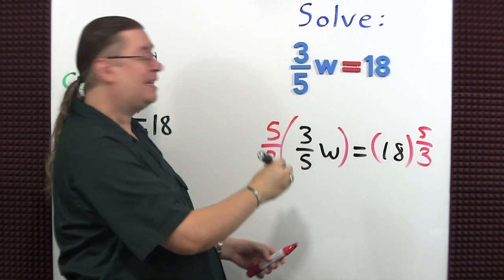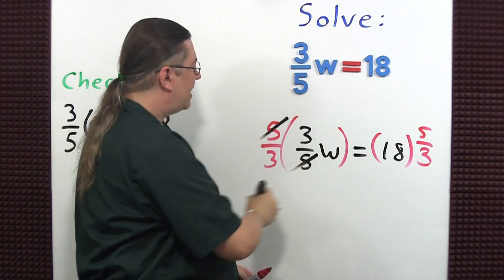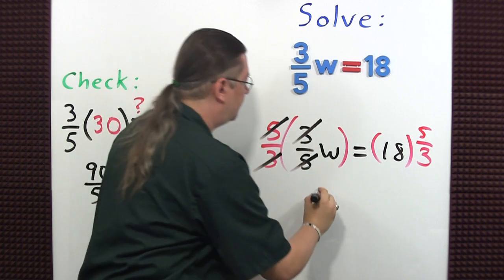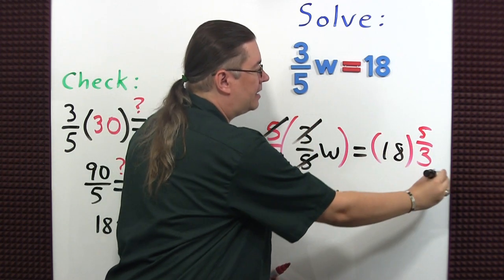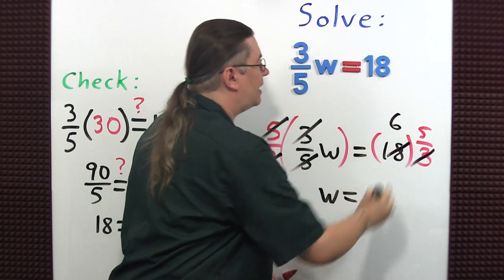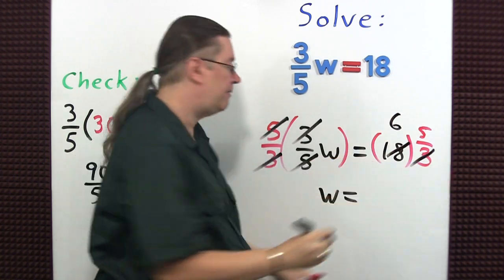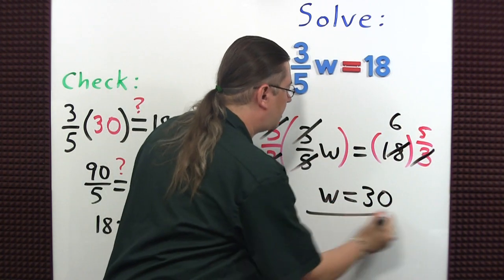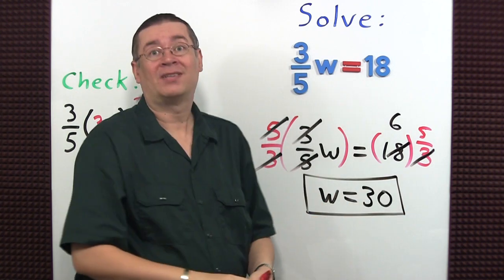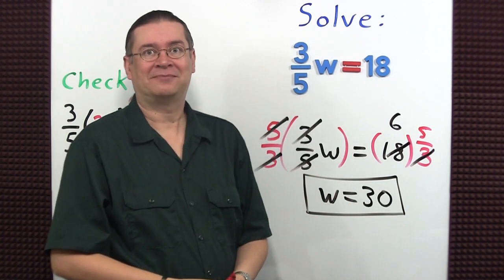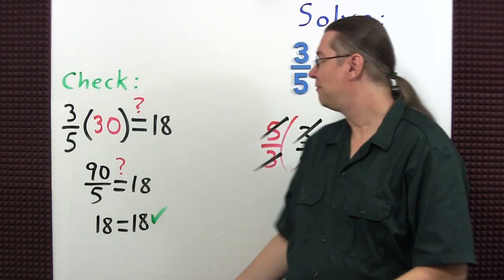So now, very conveniently, the fives cancel, threes cancel. W equals 18 divided by three is six. Six times five is 30. We've solved the equation. And here's our check.